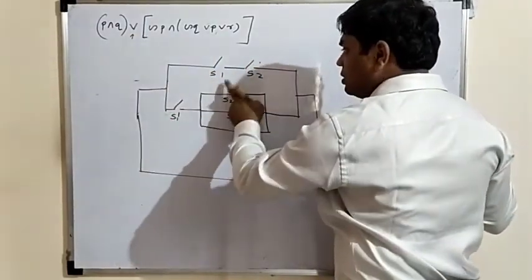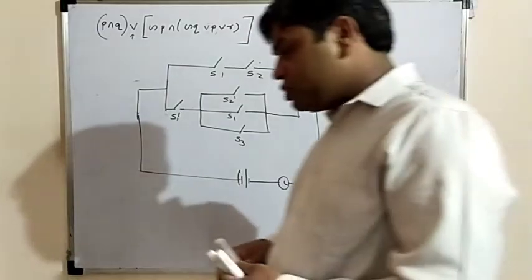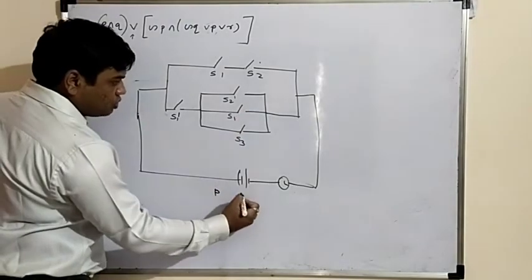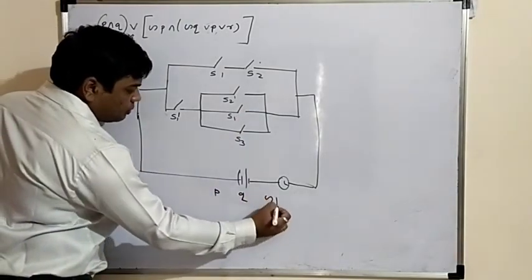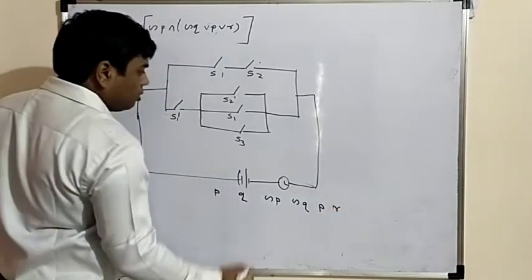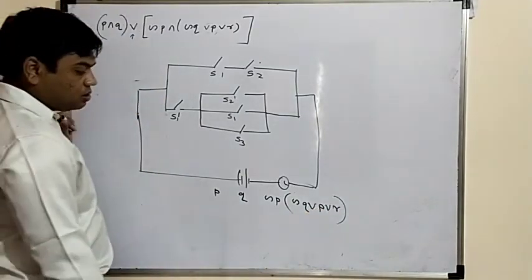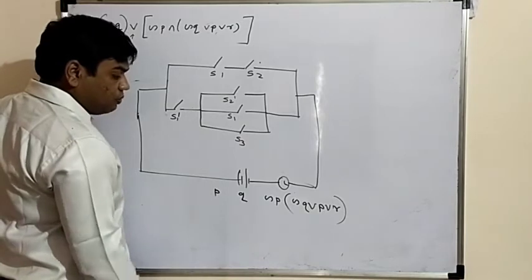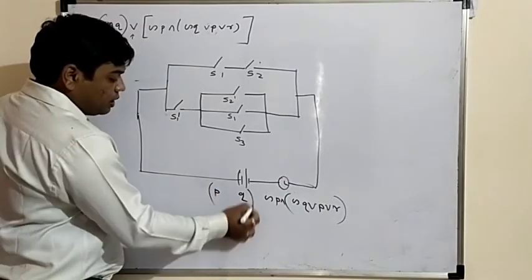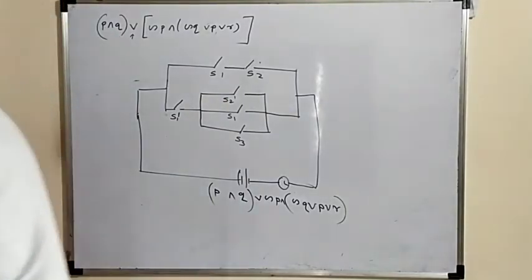Getting the circuit — so very simple. To check your circuit is right or wrong, draw the statement: S1 is P, S2 is Q, this is negation P, S2 dash is negation Q, S1 is P, S3 is R. These last three are in parallel combination. Negation P, and this means P and Q. In this way we can solve more number of questions.